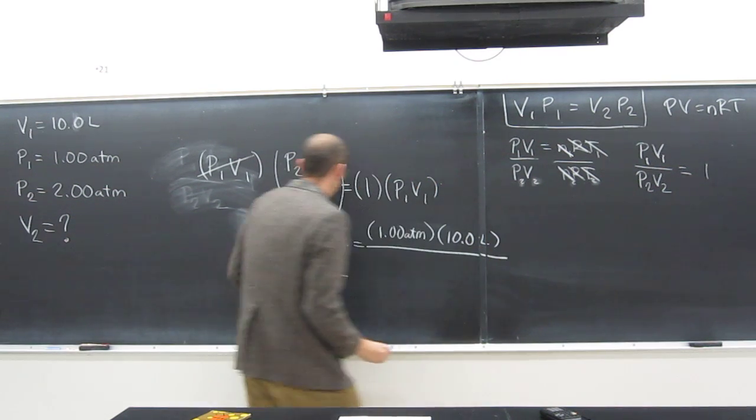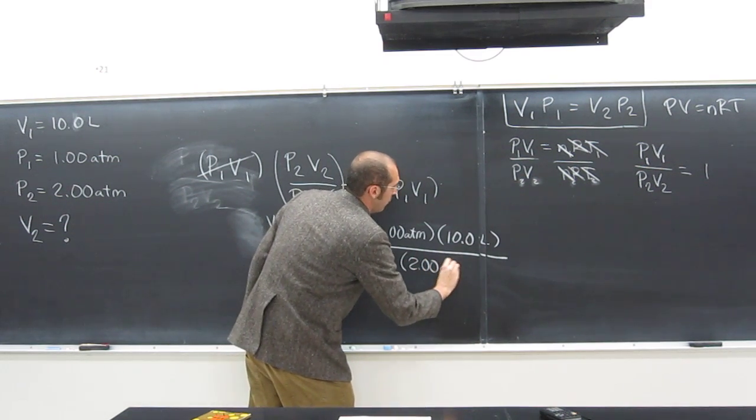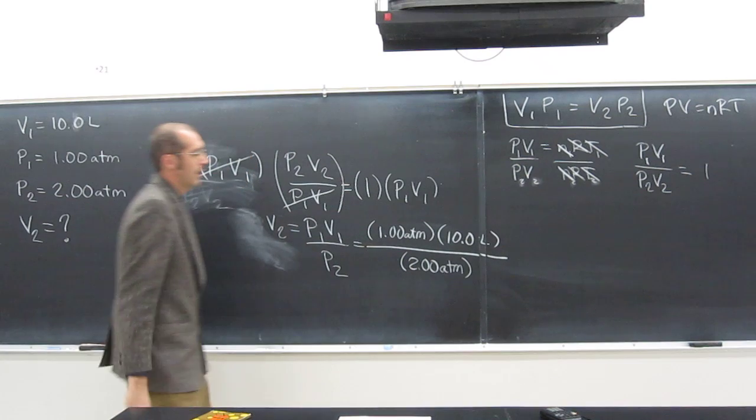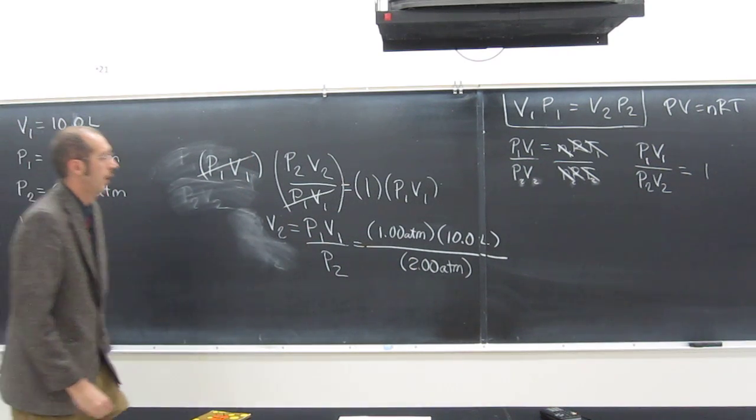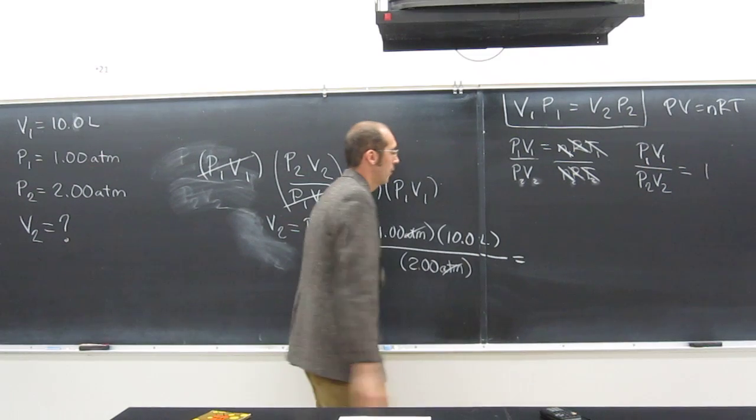Divided by P2, what's that? 2.00 ATM. Are there any units that we can cancel out here? ATM will cancel. So that will leave us units of what? Liters.